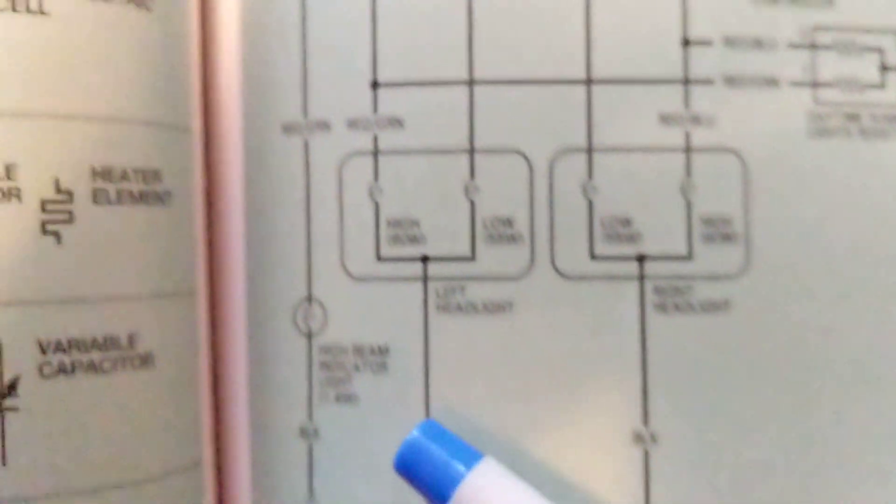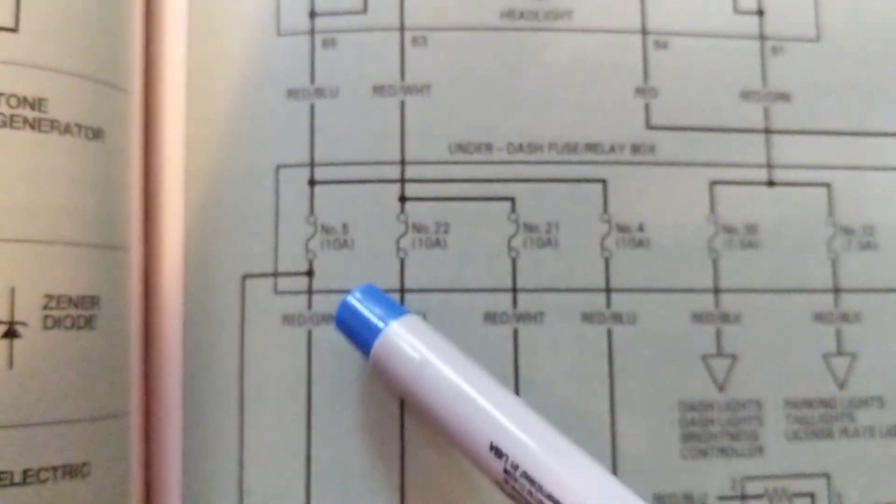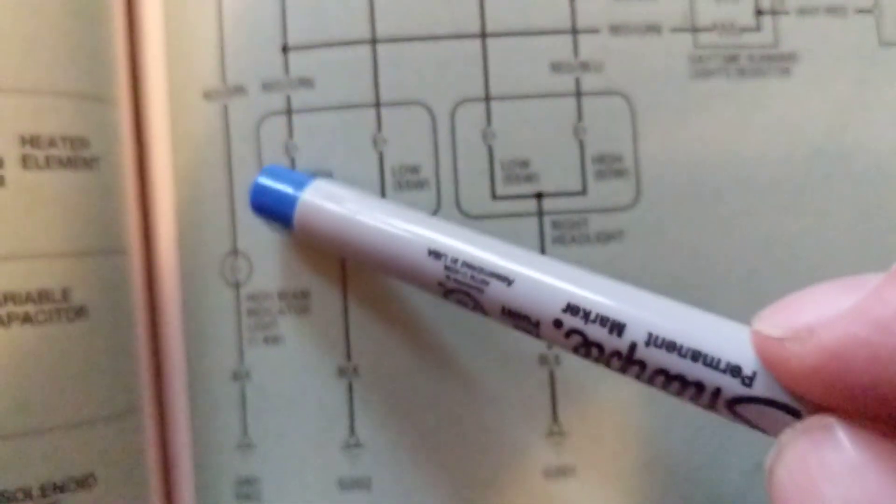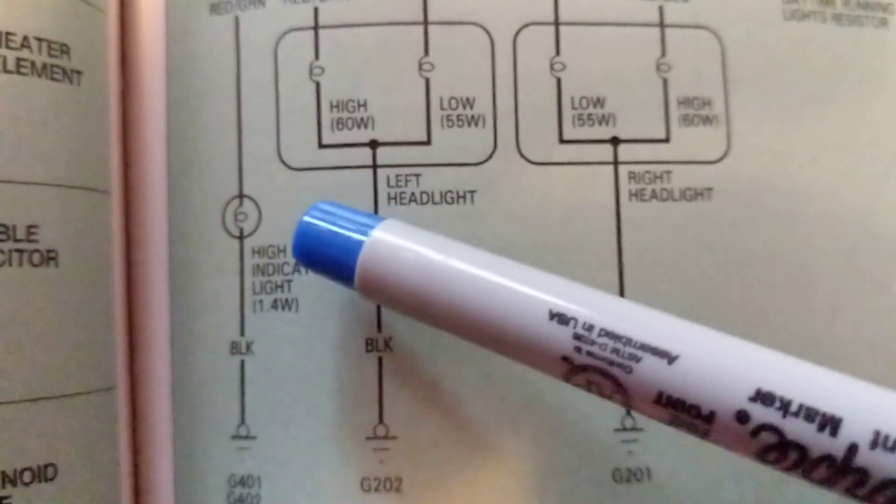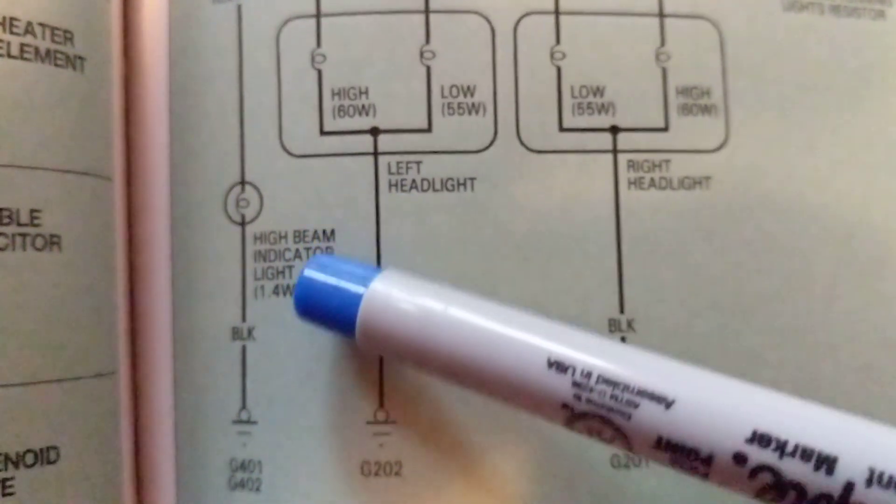Okay, and over here you also have goes to high beam indicator light, like an LED almost, to tell you you have the high beams on.